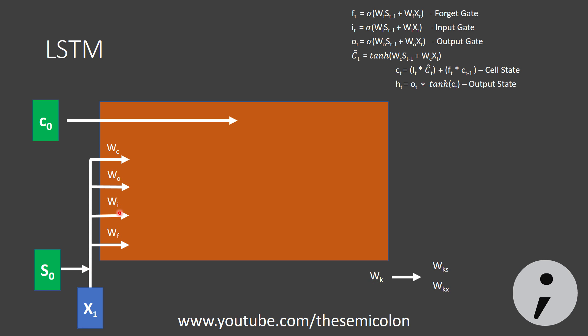First, we calculate the input gate by passing the previous state and the input through sigmoid activation. Like this. Then, we calculate the intermediate cell state by passing our input and the previous state through tanH activation. Then, we perform element-wise multiplications. And, we similarly calculate the forget gate and multiply it with the old state C0. Then, we add these to obtain our new cell state which is C1.